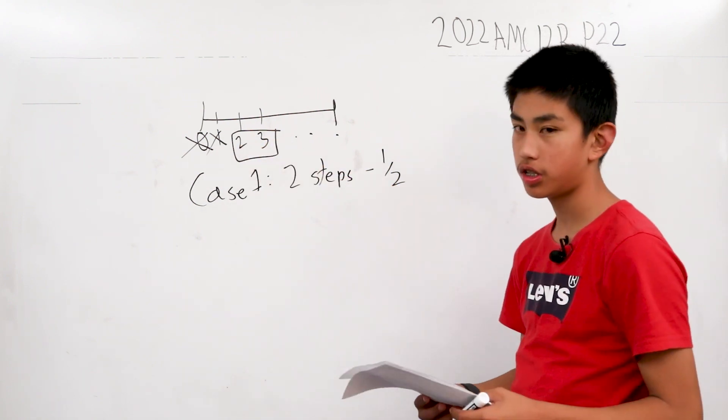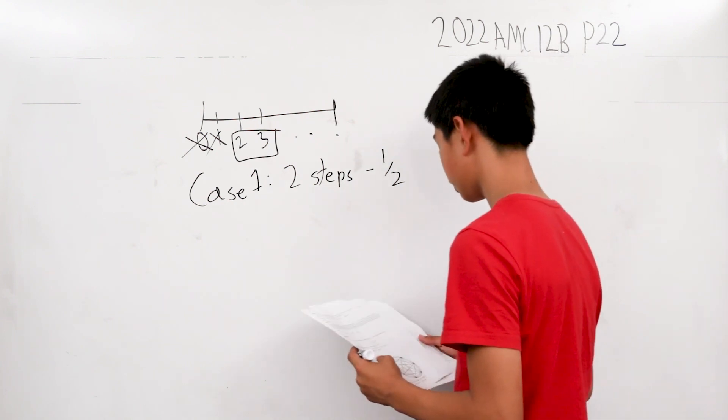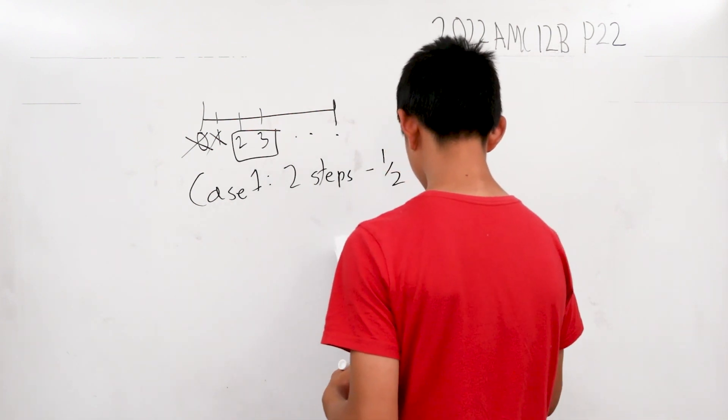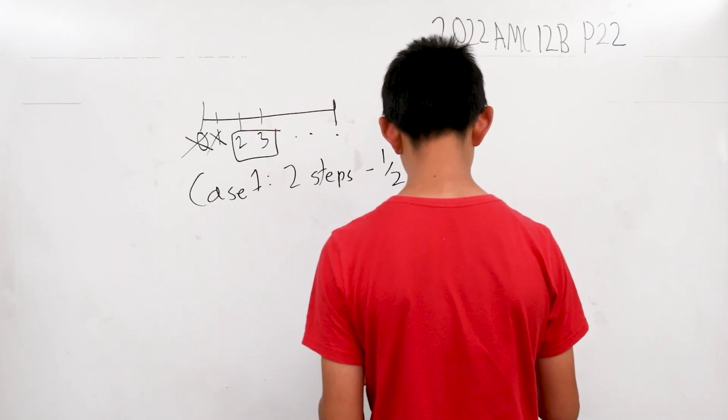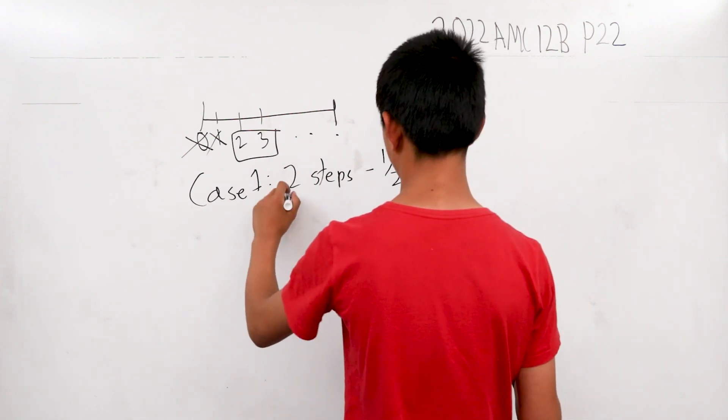This has a base probability of 1/2 occurring because there's only two of these and choosing one of these has a probability of 1/2. And the probability that Amelia passes 1 after 2 steps is also 1/2.